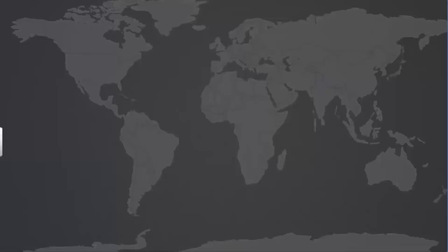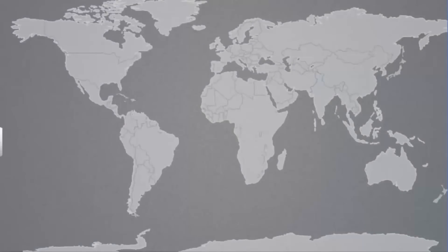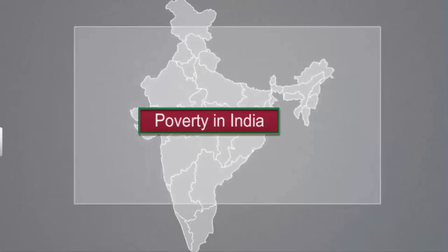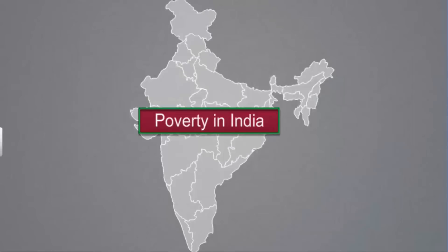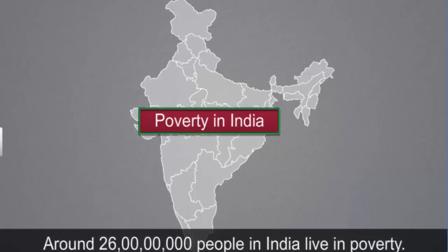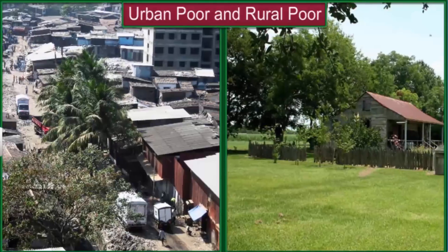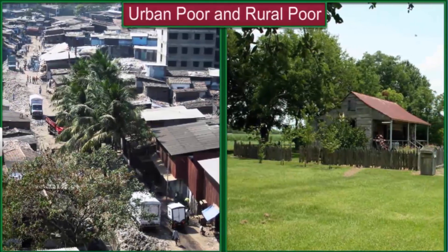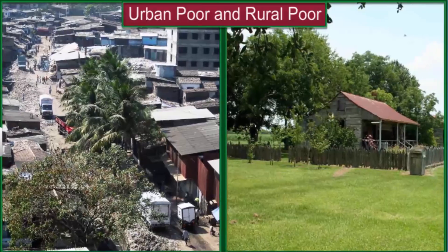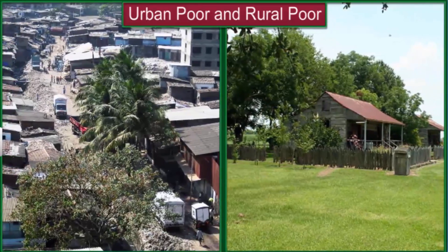Poverty is a worldwide challenge. However, the problem is more severe in India. Nearly 25% of our entire population lives in poverty. This means India has around 26 crore poor people, which is the largest for any country in the world. Not all people living in cities are rich and not all people living in villages are poor. Poverty exists in both urban and rural India.